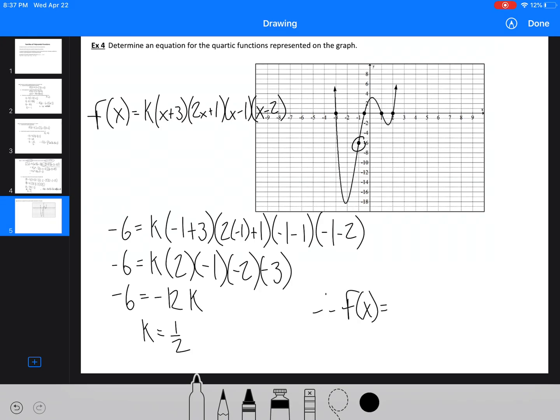f(x) equals 1 half (x plus 3)(2x plus 1)(x minus 1)(x minus 2) is the equation for this function.